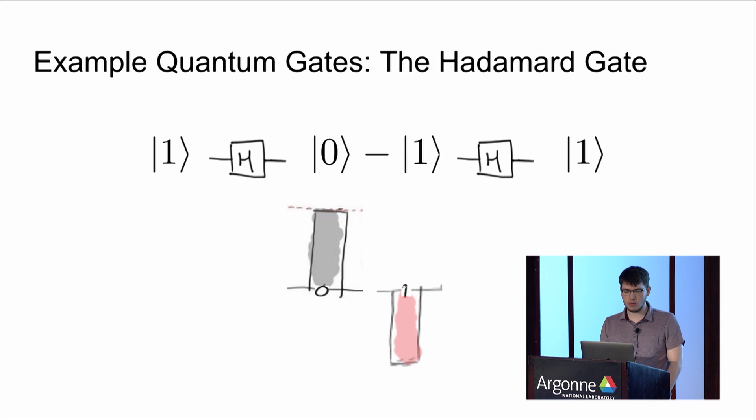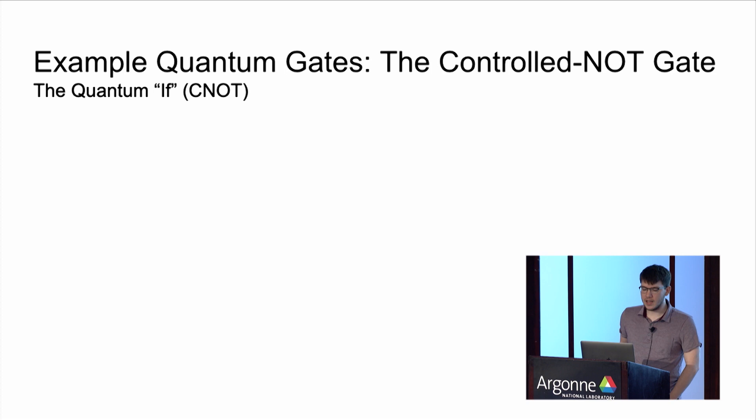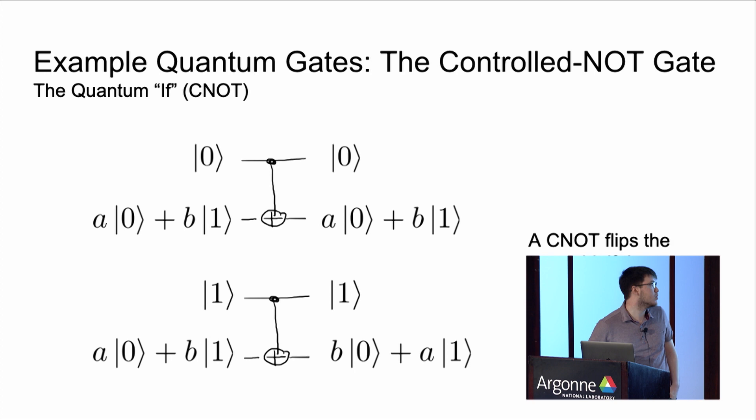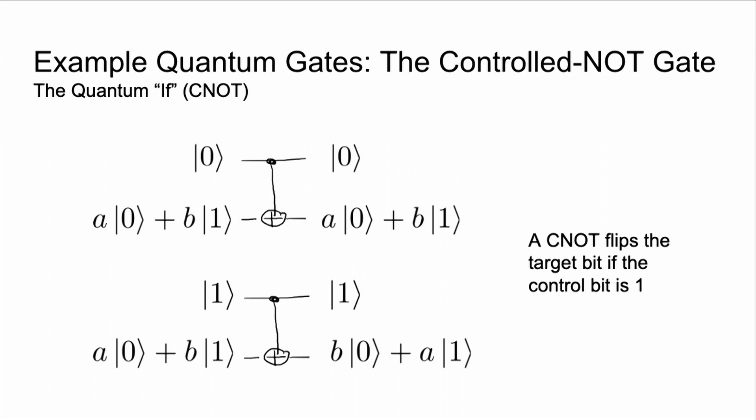The other gate we'll need is the controlled-NOT gate. We can think of this as a quantum if statement — we're going to flip the coefficients of the target bit if and only if the control bit is in the one state. In the first case, controlling on a zero, nothing happens: A0+B1 becomes A0+B1. However, if the control is one, when we apply the CNOT gate we'll flip the coefficients, so A0+B1 will become B0+A1.